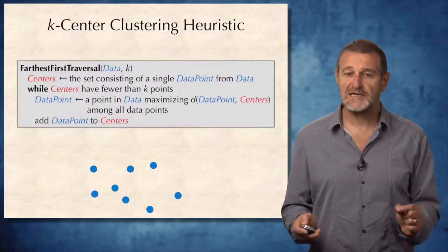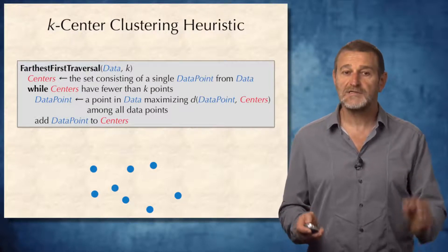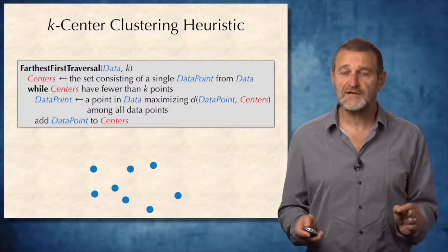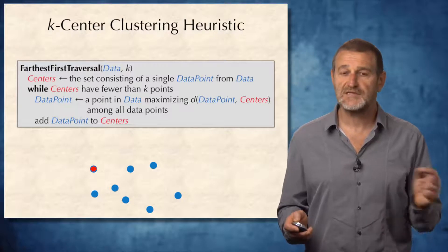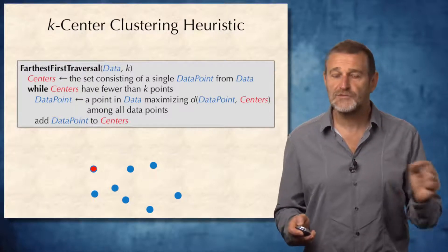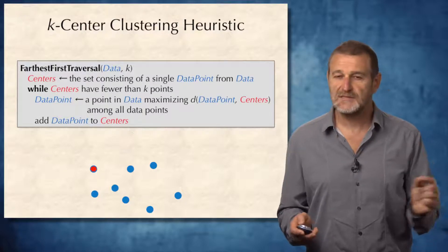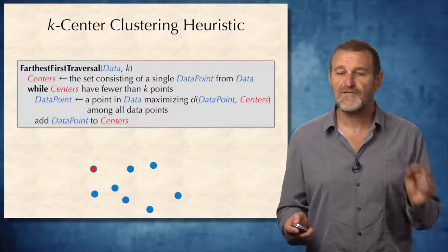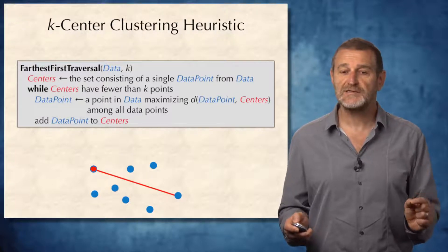Our next task is to present a k-center clustering heuristic called the farthest-first traversal. The farthest-first traversal starts by choosing an arbitrary point as the first center of the cluster. At the next step, the reasonable approach is to choose the point that is farthest apart from the existing cluster center, which would be this point.